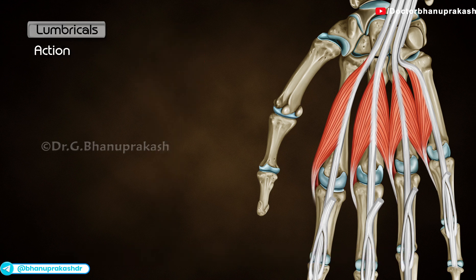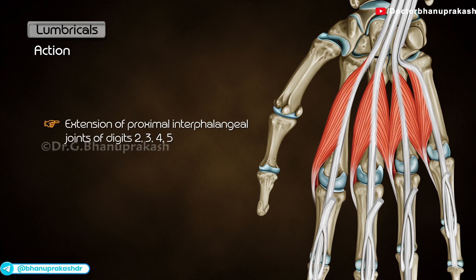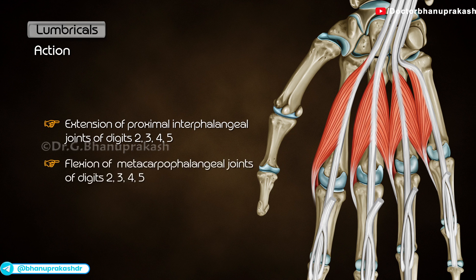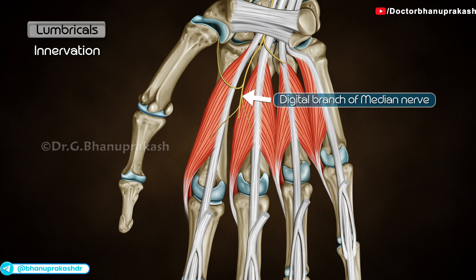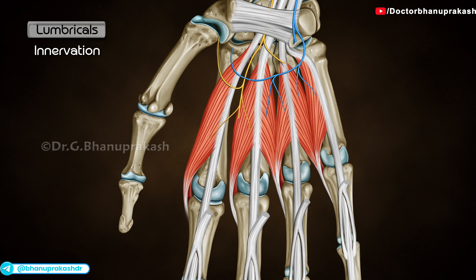Actions: Extension of proximal interphalangeal joints of digits 2, 3, 4, and 5. Flexion of the metacarpophalangeal joints of digits 2, 3, 4, and 5. Innervation: First and second lumbricals by digital branches of the median nerve. Third and fourth lumbricals by the deep branch of the ulnar nerve.